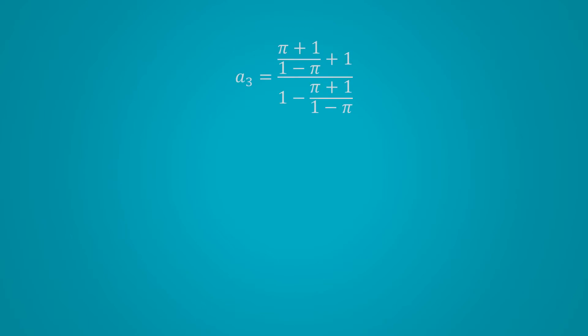So let's try to simplify this. We can multiply the top and bottom by 1 minus pi. And what we get actually isn't so bad. Pi cancels out in the numerator and 1 cancels out in the denominator. And so after we simplify, we're just left with negative 1 over pi.